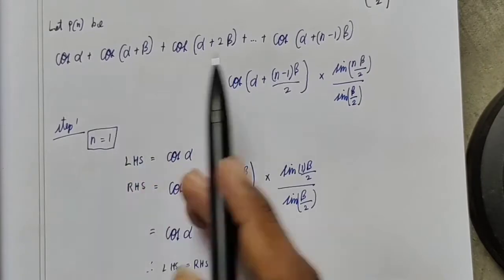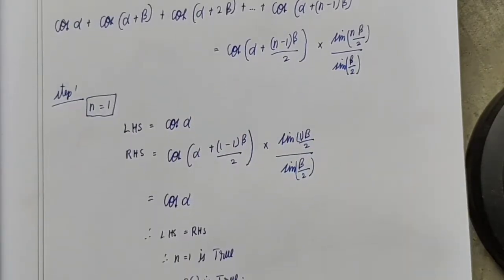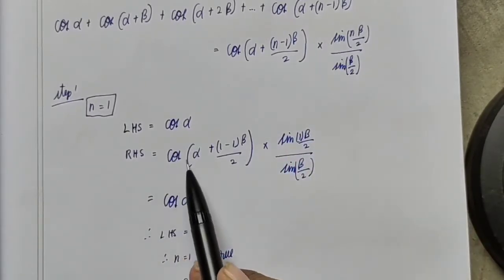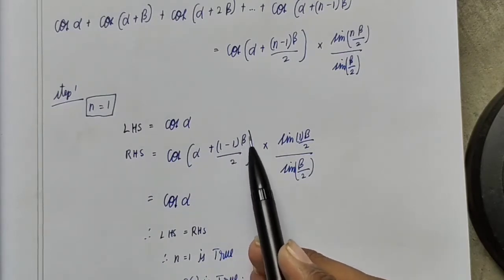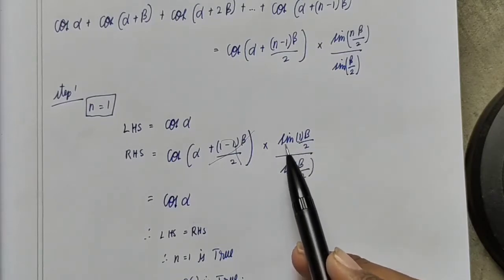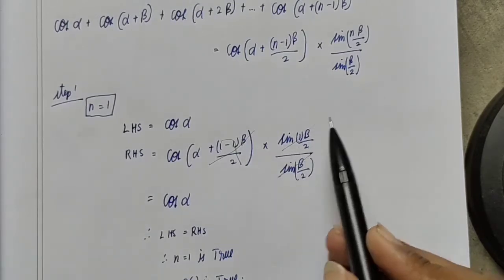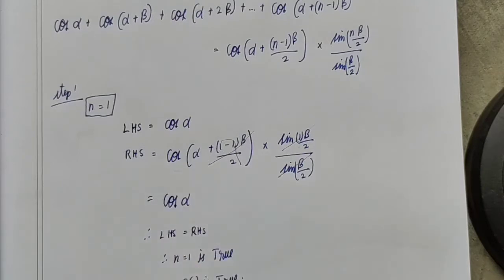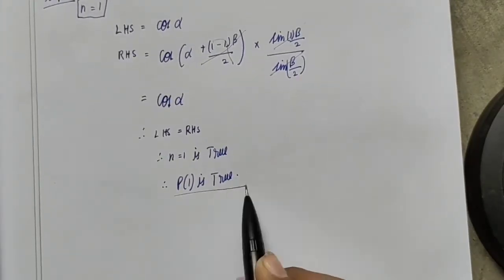For n = 1, the left-hand side is cos α. On the right-hand side, (1 − 1) = 0, so cos(α + 0·β/2) = cos α; sin(1·β/2) divided by sin(β/2) cancels to 1. So LHS = cos α and RHS = cos α. Therefore P(1) is true.